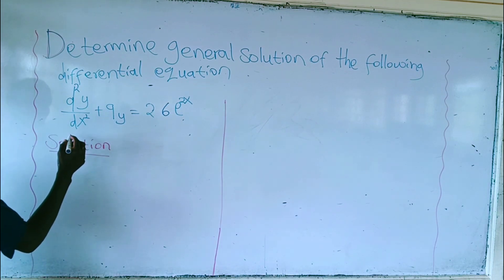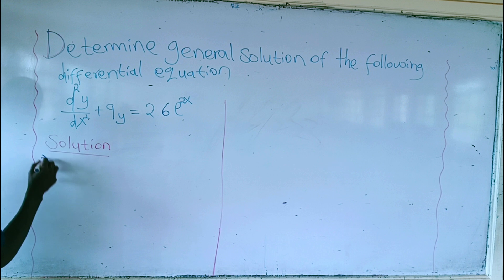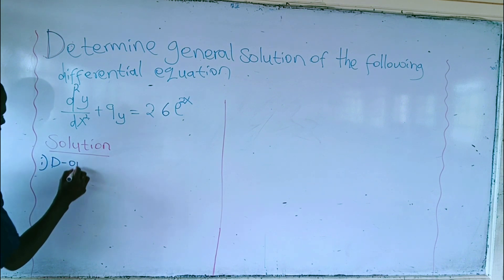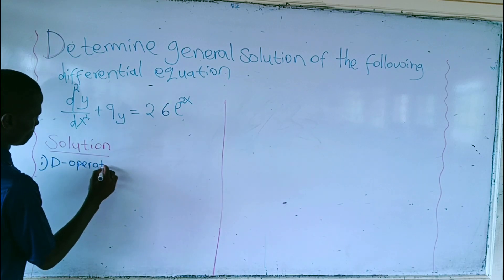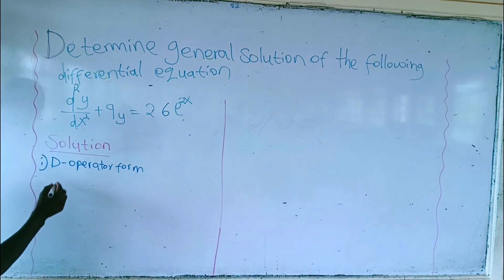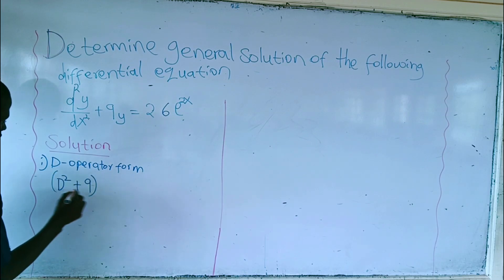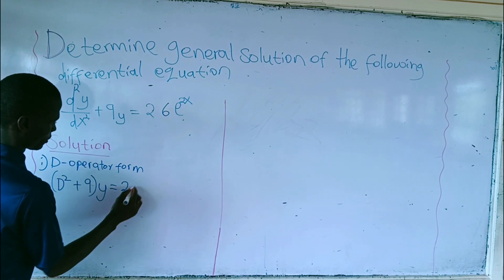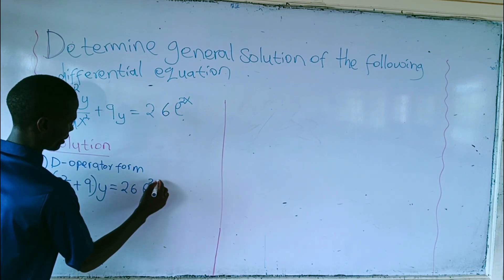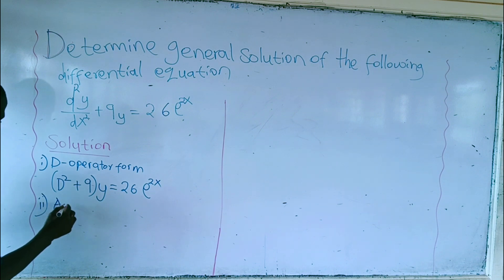This is a second order differential equation because it has a power of 2 on d and on x squared. The first step, we'll write it into D-operator form. This equation, if you write it into D-operator form, it will be d squared plus 9, y is equal to 26 exponential raised to the power 2x. After writing this, the second step, we're going to write into the auxiliary equation.